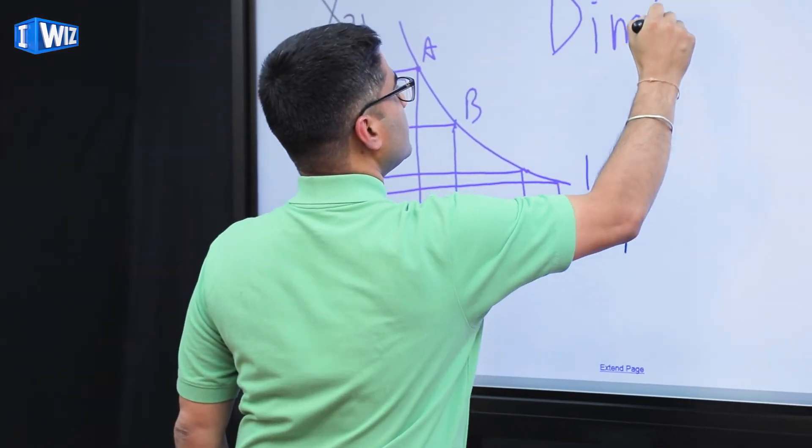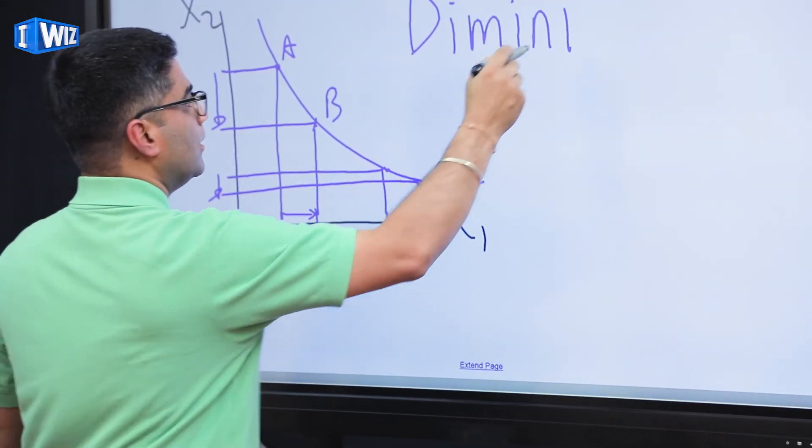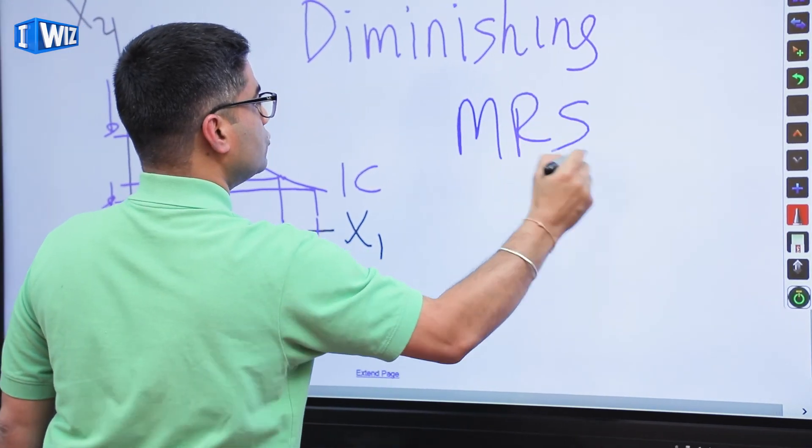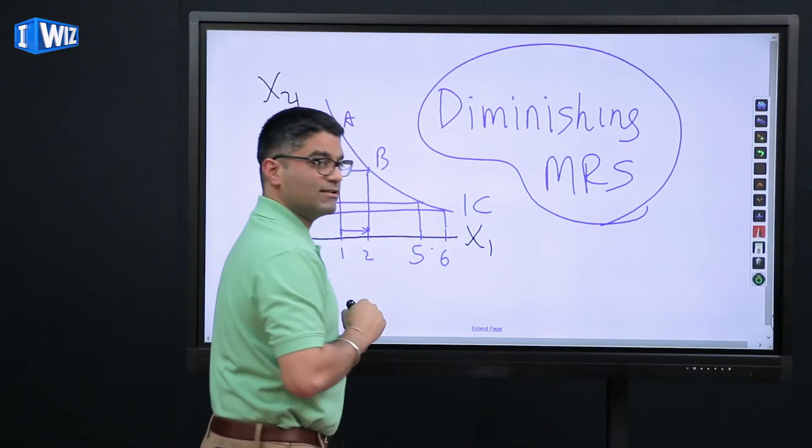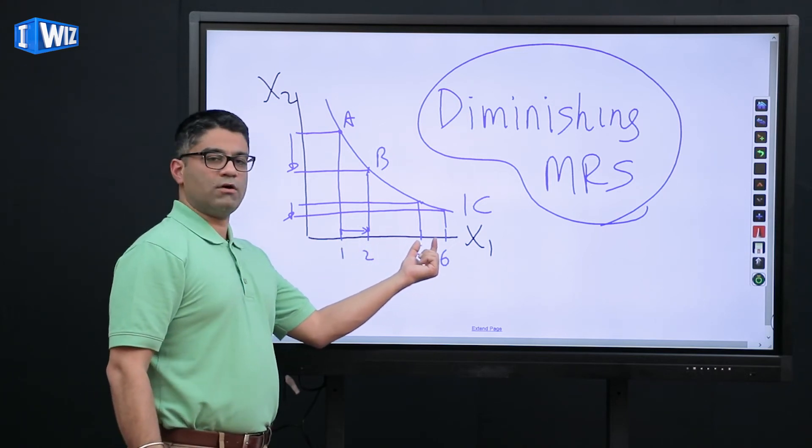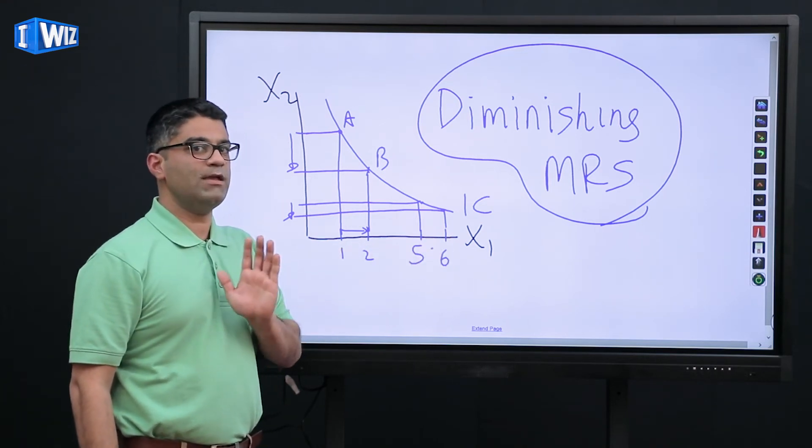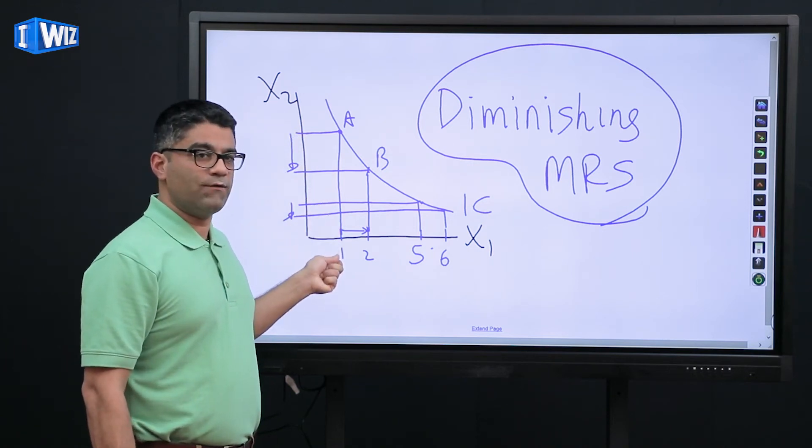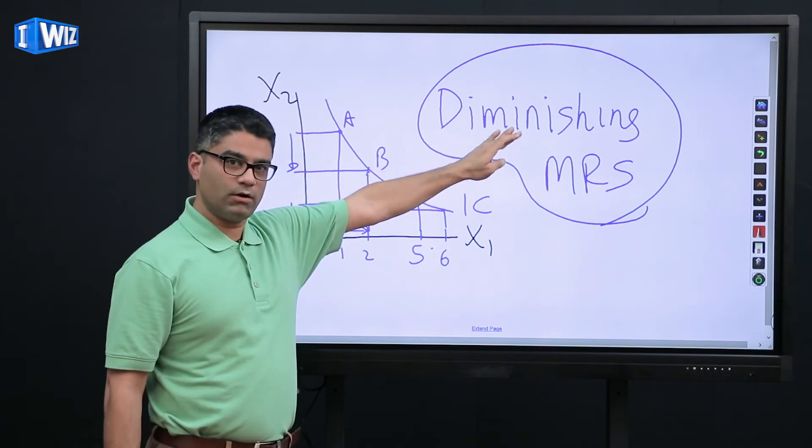So this concept of the way we substitute goods is diminishing. So what we say here, and this is a very important concept in this chapter, is that our marginal rate of substitution between x2 and x1 is diminishing. Or for each extra unit of x1 that I want to get to leave me equally happy, the amount of x2 I'm willing to give up is going to become smaller and smaller and smaller.